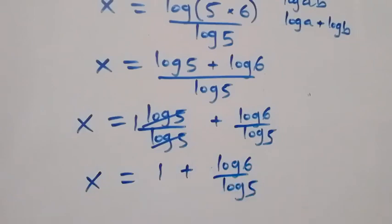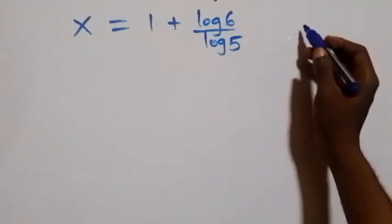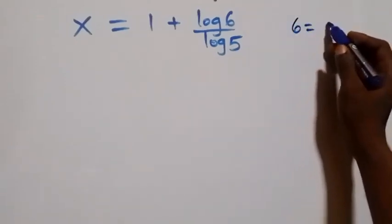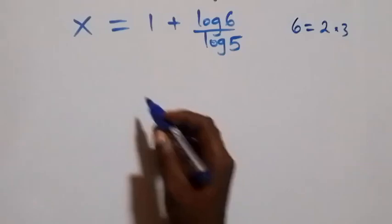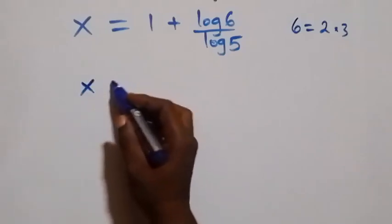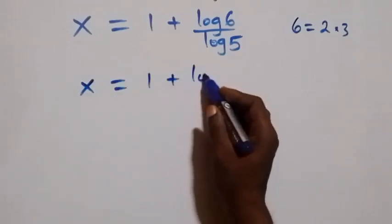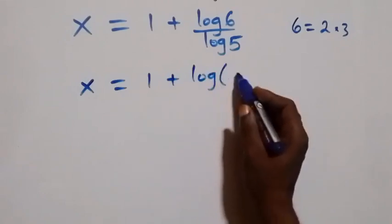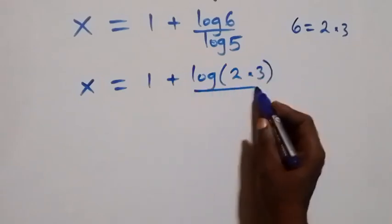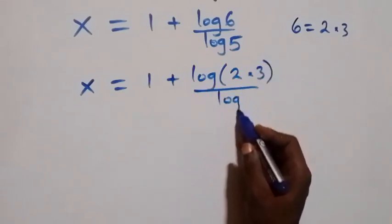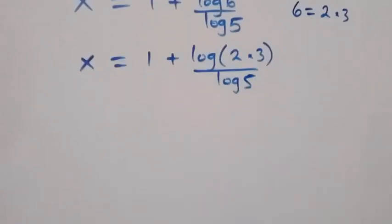The next step: from here we can simplify by writing 6 as 2 times 3. That is, what we have here becomes x equals to 1 plus log of the bracket 2 times 3, over log 5. Then we also apply the law of logarithms.